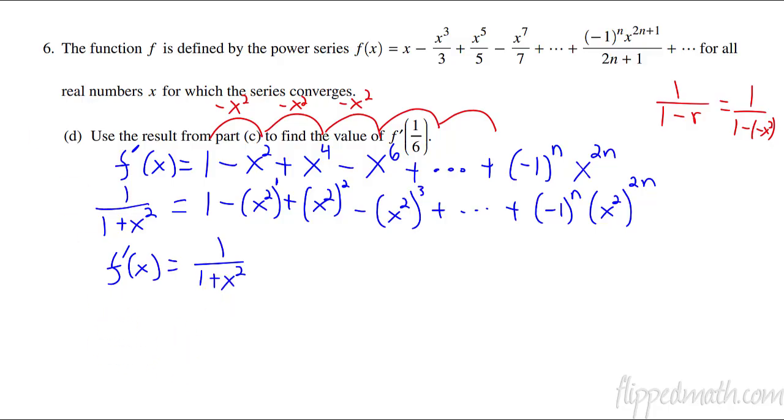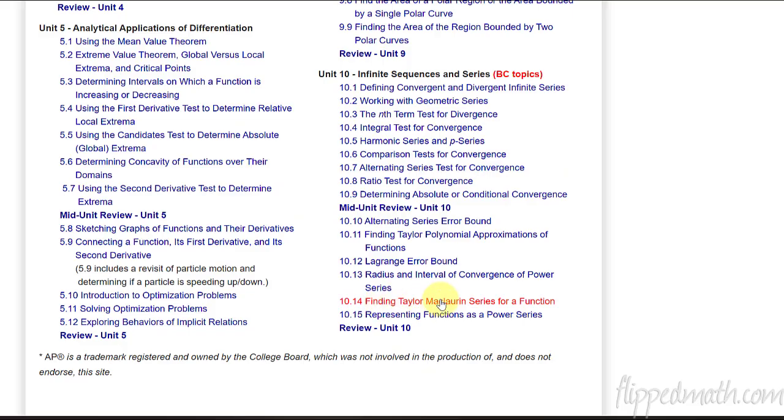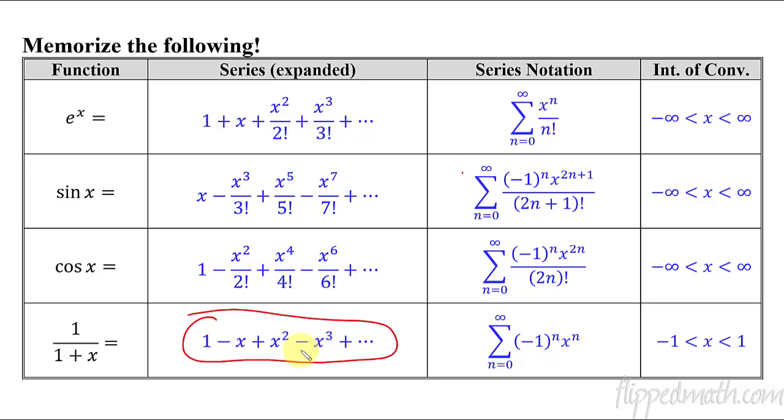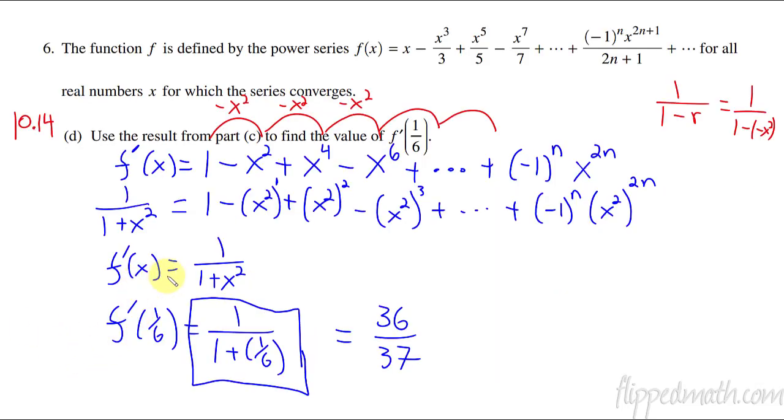And then from here, it is literally just plugging in the 1/16. So f prime of 1/16 is equal to 1 over 1 plus 1/16. And you can just leave the answer like that. That's good enough. I would stop right there. If you wanted to keep working out because you love fractions and you just like playing with fractions, then this answer would be 36/37ths. Now what lesson is this from? This is 10.14. And the reason I say 10.14, finding Taylor McLaren series for a function. And the reason I say that it's 10.14 is because that's where you recognize these special things here. And so if you could have just seen that, then you could jump straight to that equation right there and then plug in the 1/16.